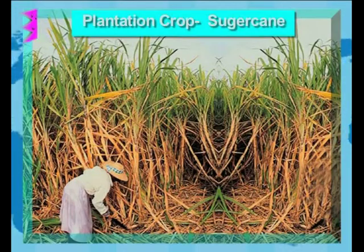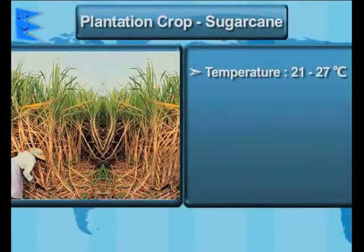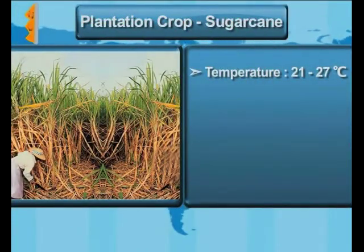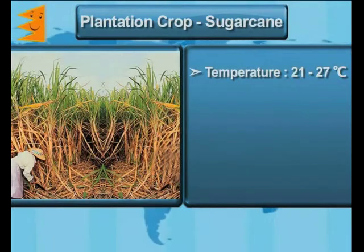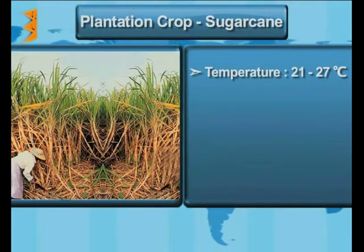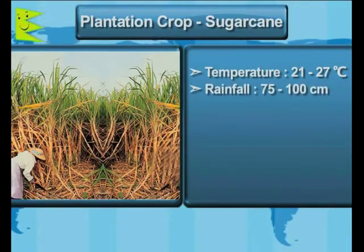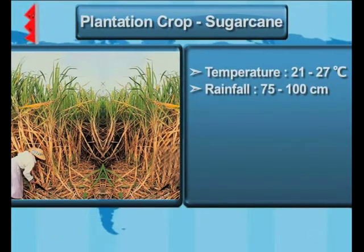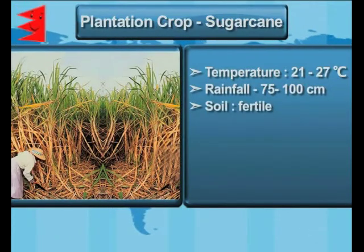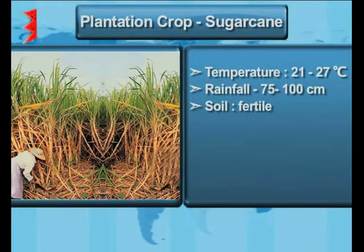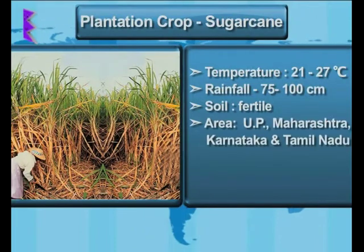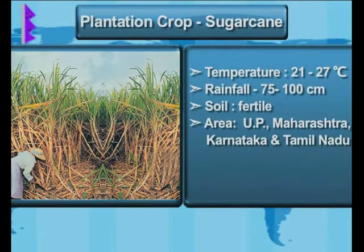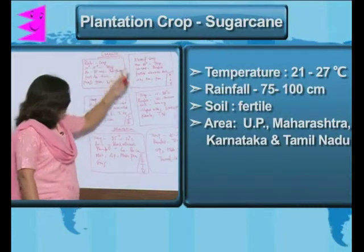Then we come to sugarcane. This plantation crop needs a temperature between 21 to 27 degrees centigrade, the rainfall is 75 to 100 centimeters, and the states which grow sugarcane are Uttar Pradesh, Maharashtra, Karnataka, and Tamil Nadu.